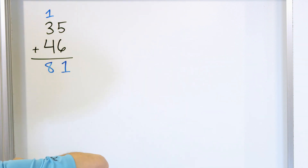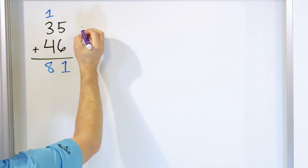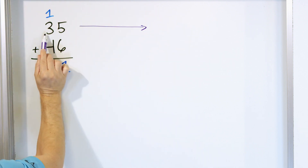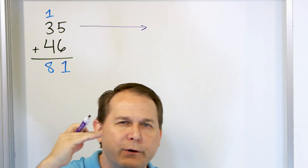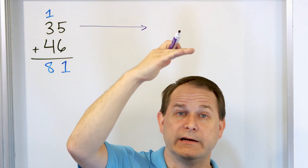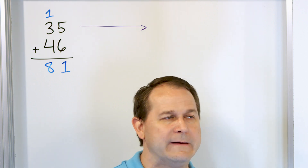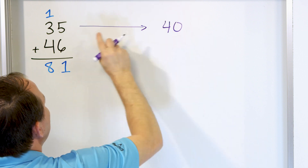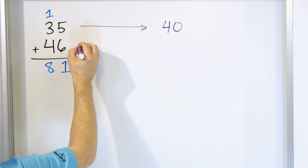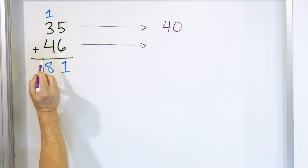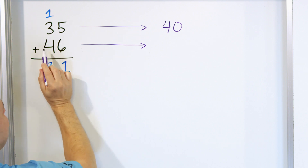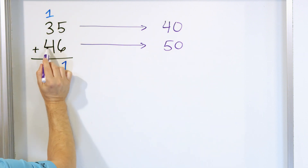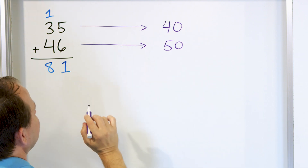If we round 35 to the tens place, we look to the number next door — it's a five. So our choices are to go up to 40 or down to 30. Since the number next door is five, we round up to 40. For 46, rounding to the tens place: since 6 is bigger than five, we round up to 50. Our choices are 50 or 40, and we round up to 50.